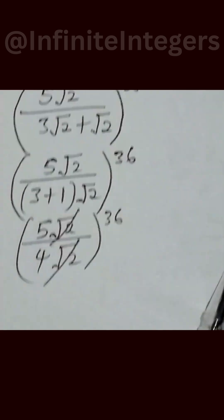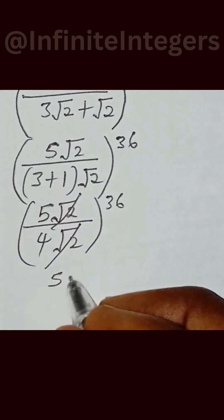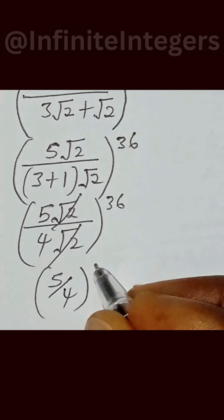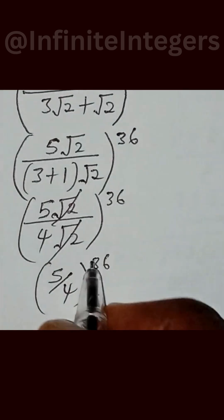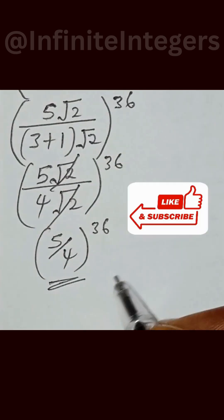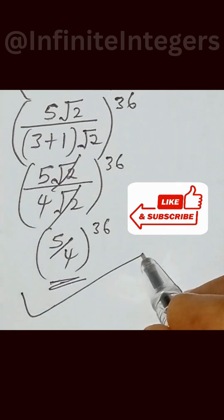And we are now left with 5 over 4 to the power of 36. And this is enough as simplification. There you have it.